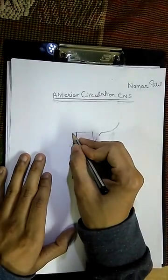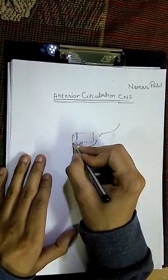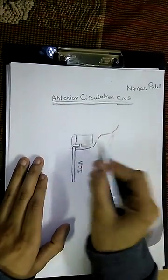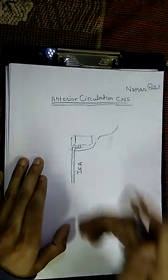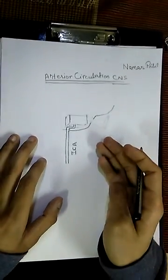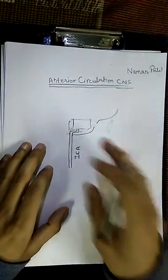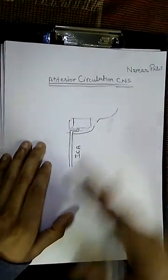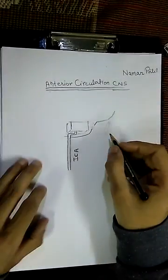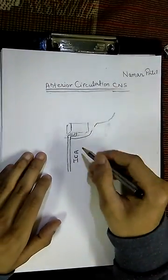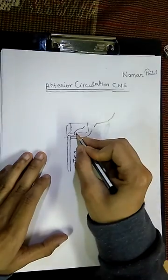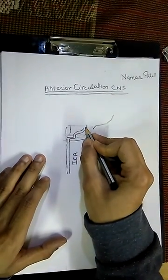The cavernous sinus is nothing but a true dural venous sinus. It is an exception that the internal carotid artery is passing through this venous sinus.